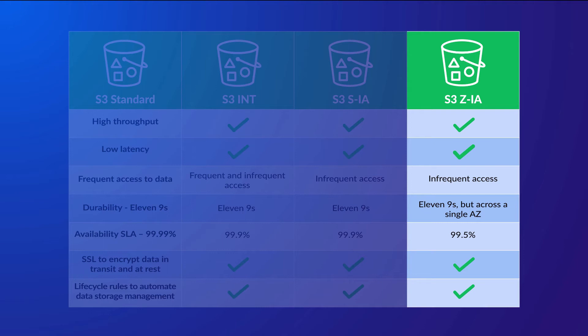One Zone IA does however offer the lowest level of availability, which is currently 99.5%, and this is down to the fact that your data is being stored in a single availability zone. Should the AZ storing your data become unavailable, then you will lose access to your data, or even worse, it may become completely lost should the AZ be destroyed in a catastrophic event. Lifecycle rules and encryption mechanisms are in place to protect your data both in transit and at rest.